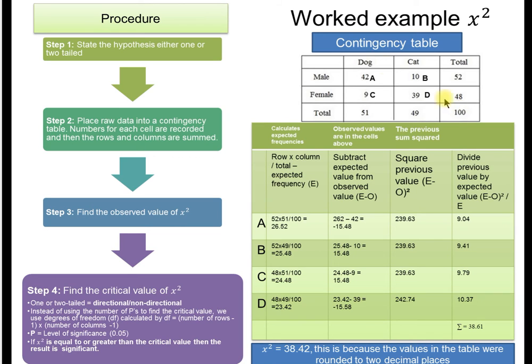48 females and 52 males in total. Of the 52 males, 42 said that they prefer dogs and 10 said they prefer cats. And then we flip it. 9 females say they like dogs and 39 say they like cats.